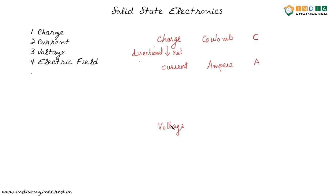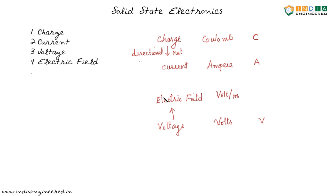Then we discussed about voltage. We said that voltage will set up an electric field throughout the material when applied. The unit of voltage is volts, and the unit of electric field is volt per meter. When we apply a voltage, it sets up an electric field across the material, and charges in the electric field experience a force. If that force is sufficient, the charges will have a net directional movement and it will cause current flow.